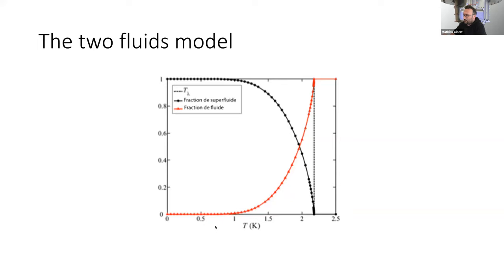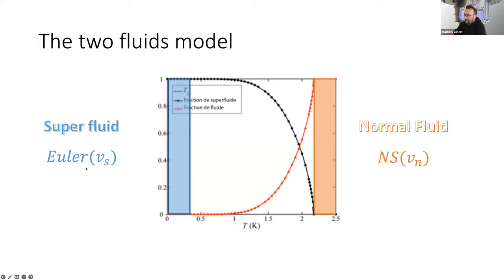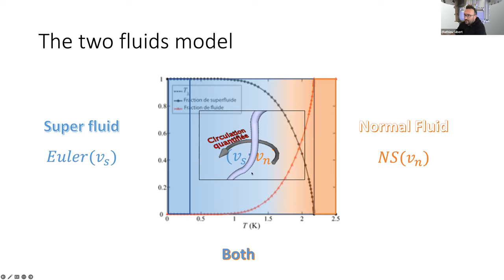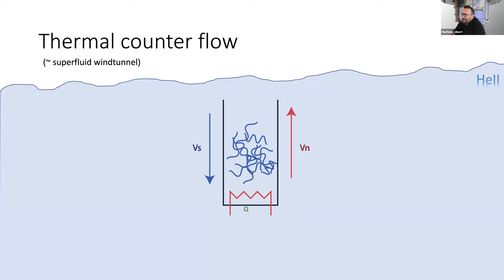One of the most common models we use is the two-fluid model. I'd like to introduce it without equations. At high temperature, meaning above 2.17 Kelvin, we have a normal fluid that obeys a Navier-Stokes equation. At very low temperature, we have a superfluid, the perfect fluid that obeys an Euler equation. And in between, we have a superposition of both of these fluids. The way they interact is through this very funny object called quantum vortex.